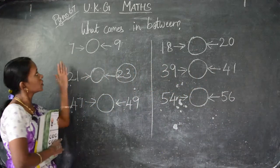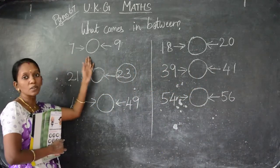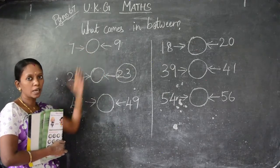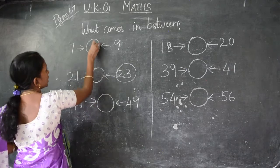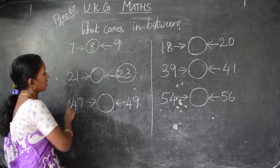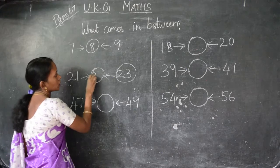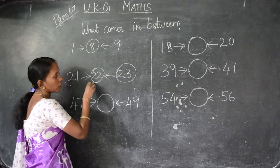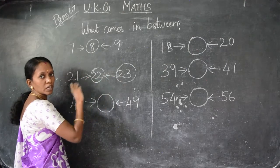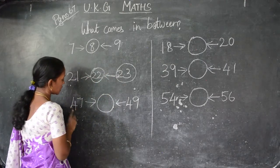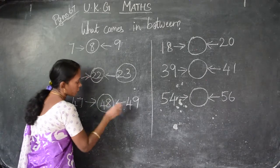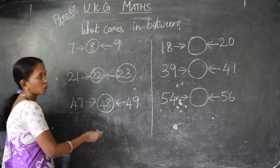See, listen children. After 7, what will come? 8. Before 9, what will come? 8. So the between number is 8. Like that you have to find — after 21 is 22, before 23 is 22, so between 21 and 23 is 22. After 47 is 48, before 49 is 48, so between is 48.